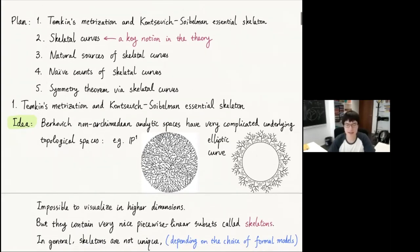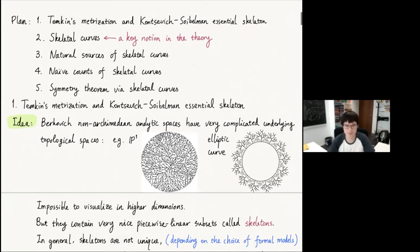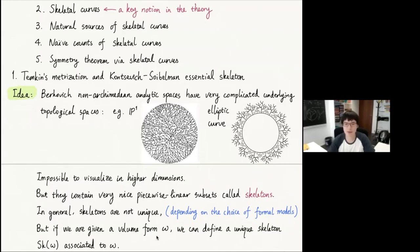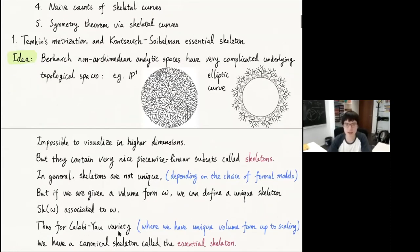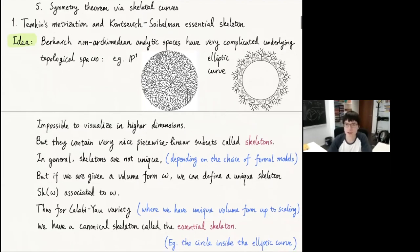The Berkovich analytic elliptic curve is infinitely many trees attached to a circle. It is impossible to visualize Berkovich analytic spaces in higher dimensions, but they contain very nice piecewise linear subsets called skeletons. In general, skeletons are not unique — they depend on the choice of formal models. But if we are given a volume form omega on the analytic space, then we can define a unique skeleton Sk of omega associated to the volume form omega. Thus, for a Calabi-Yau variety, where we have a unique volume form up to scaling, we have a canonical skeleton called the essential skeleton. For example, the circle inside the elliptic curve is the essential skeleton of the elliptic curve.